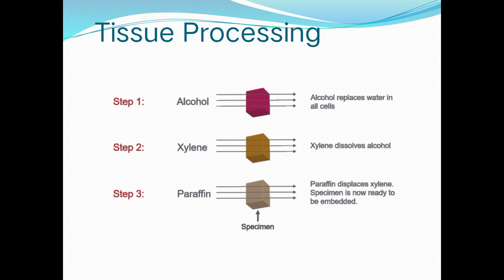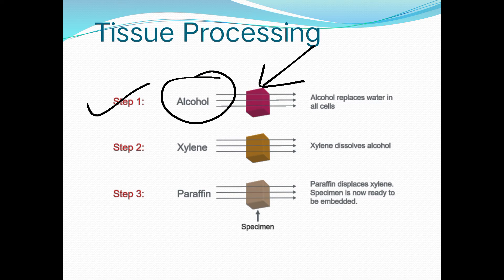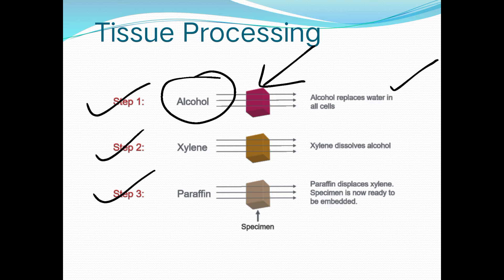The processing steps involve: first, alcohol treatment — alcohol displaces water in all cells, acting as a dehydrating agent. Next, xylene treatment — xylene dissolves and removes the alcohol; it is a clearing agent. Then the specimen is placed in paraffin, which displaces the xylene, and the specimen is ready to be embedded.